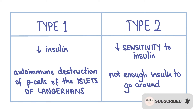Diabetes mellitus is a condition whereby either a deficiency of insulin or a reduced sensitivity to insulin results in high levels of serum glucose and a group of metabolic disorders. In type 1 diabetes there is autoimmune destruction of the beta cells of the islets of Langerhans found in the pancreas, resulting in a reduction of insulin. In type 2 diabetes there is a relative insulin deficiency due to an excess of adipose tissue, and cells have a reduced sensitivity to insulin so glucose molecules are unable to be absorbed into cells and remain in the blood instead. High levels of glucose in the blood is called hyperglycemia.